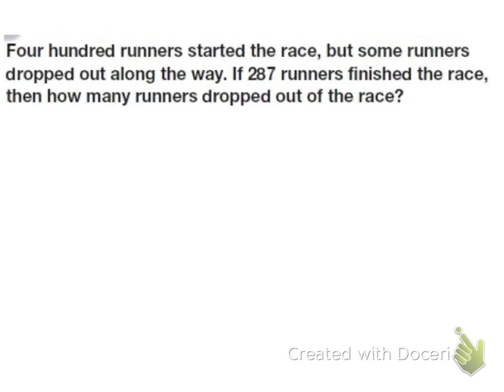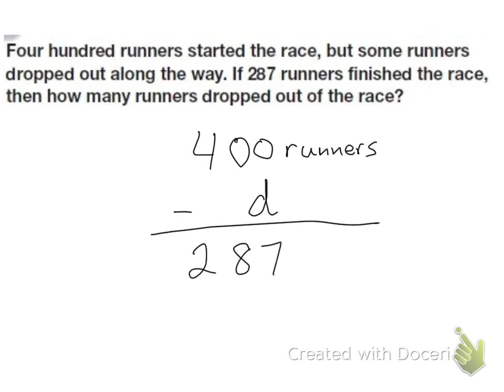All right, for this next problem, it says 400 runners started the race, but some runners dropped out along the way. If 287 runners finished the race, then how many runners dropped out of the race? So first, I need to write my problem. So I start with 400 runners. Then some dropped out. I don't know how many did, so I'm going to put a D. And then at the end, we have 287 runners who finished the race.